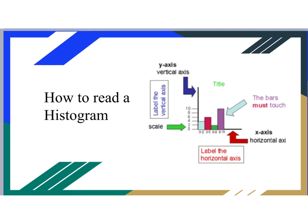Let's talk about a histogram, how to read it, and some of the important pieces of it. Something you notice about a histogram is it looks very similar to a bar graph. However, with histograms, the bars have to touch. They have to be touching each other, and that's because it represents a continuation of numbers.